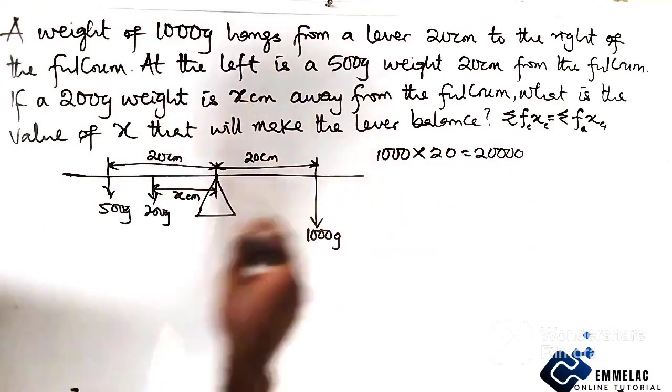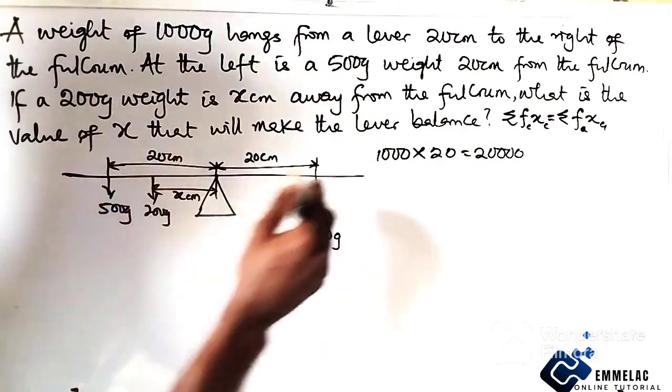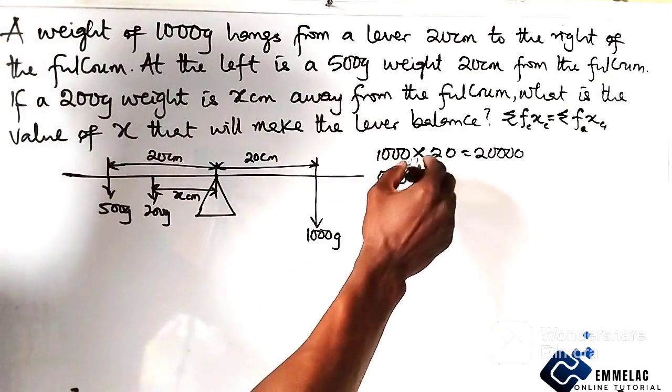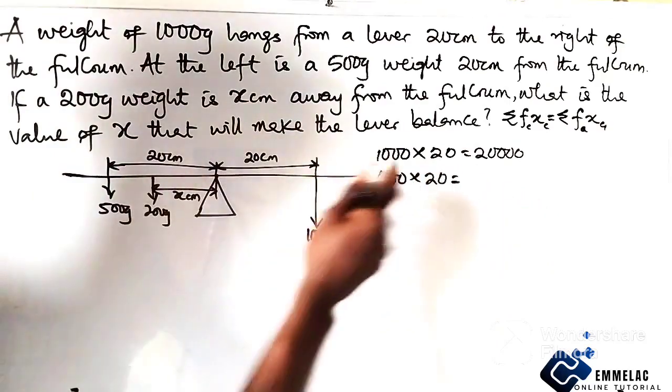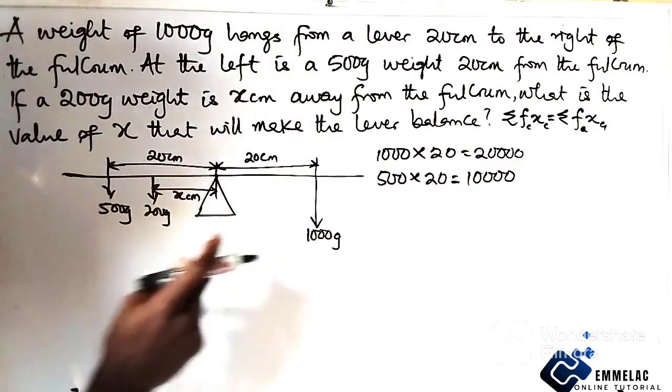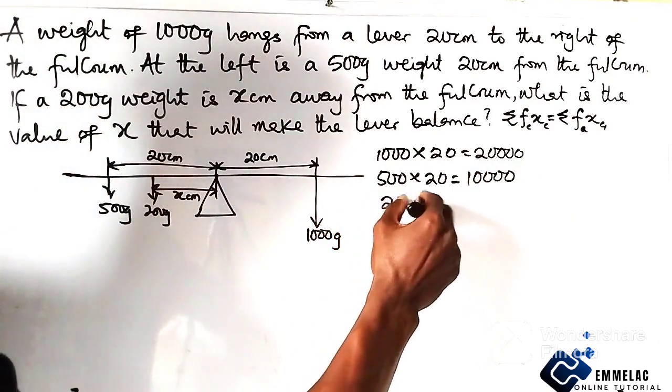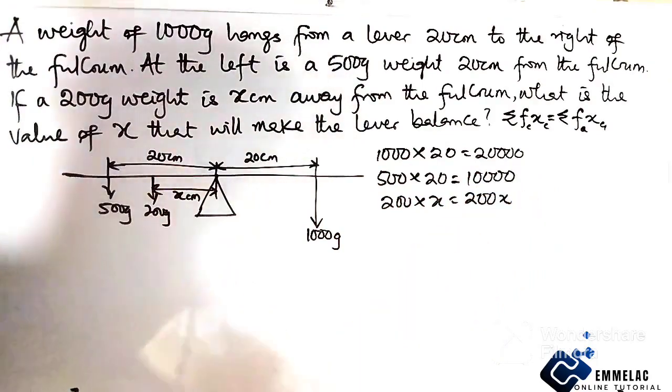Okay, so here for the anticlockwise moment, we have this 500 times 20, which is 10,000. Now for 200 and x, so 200 times x will give us 200x.